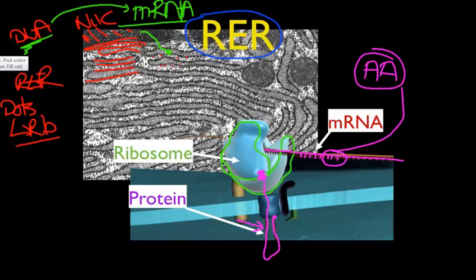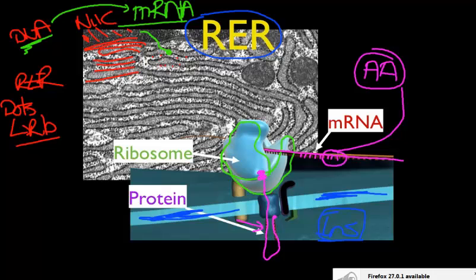The other important thing to notice in this picture is these ribosomes are attached to the membrane of the rough endoplasmic reticulum. And you notice that the protein is going to end up on the inside of the rough endoplasmic reticulum. And that's a very important step. So let's go on and draw that.